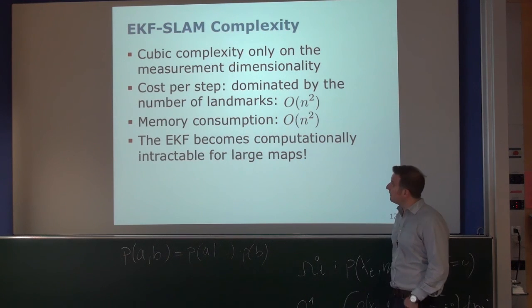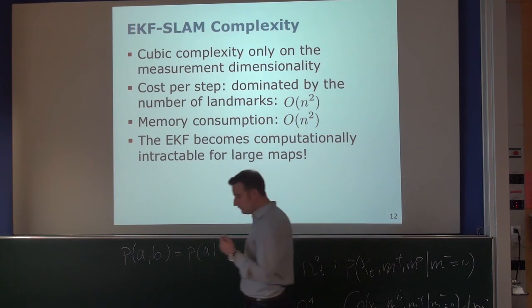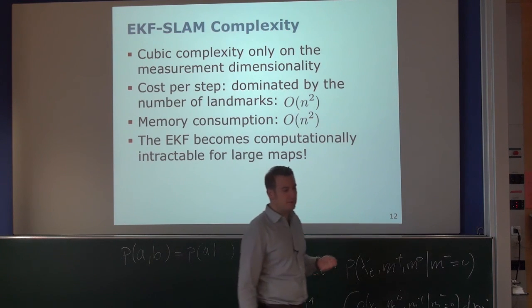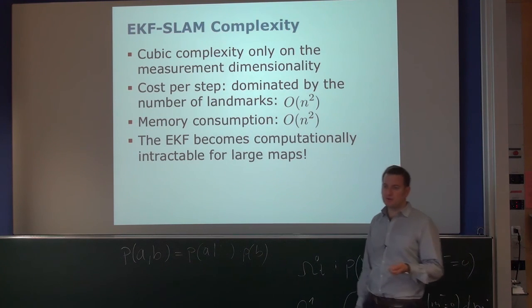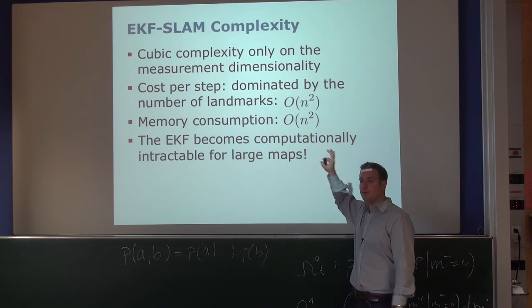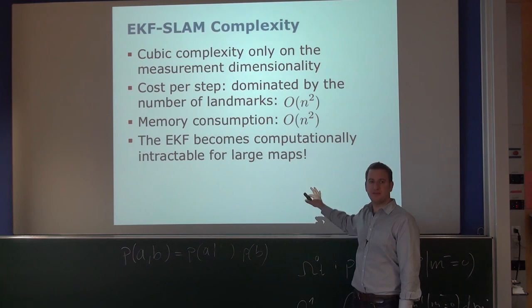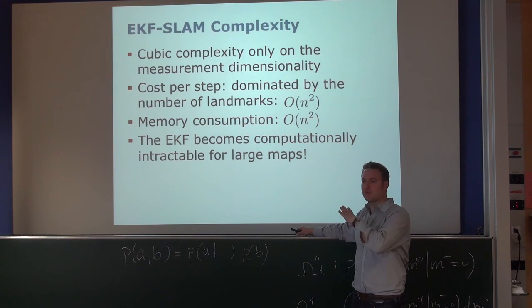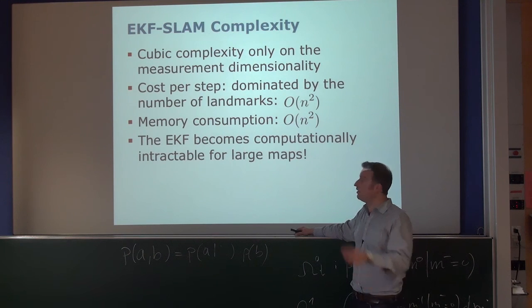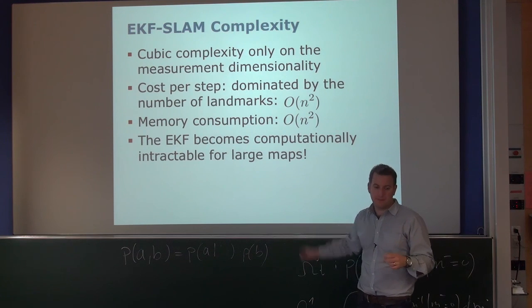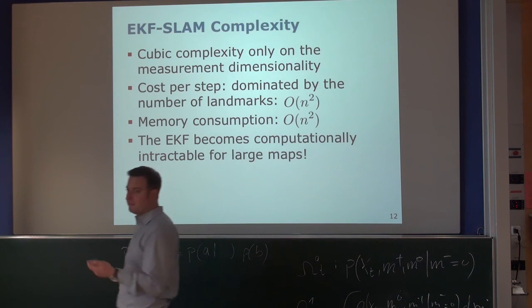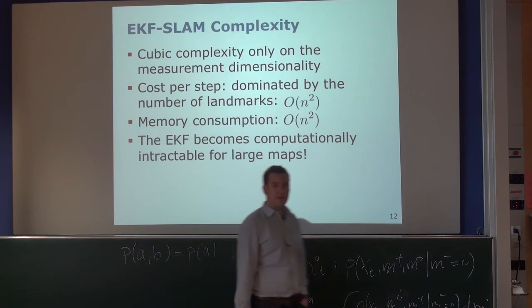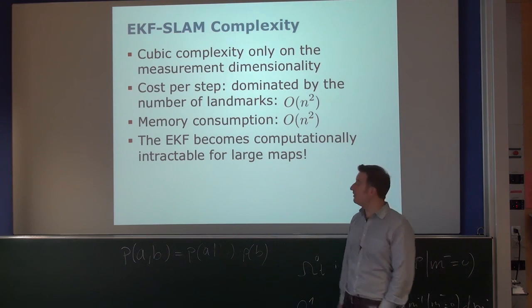The complexity of the EKF SLAM algorithm is dominated by the number of landmarks — it is quadratic in the number of landmarks, with quadratic memory consumption. This quadratic cost holds for the SLAM case because we see only a limited number of features and update only a small fraction of the state. Even with quadratic complexity, the EKF can become intractable for large-scale mapping with many features. It simply doesn't scale well.